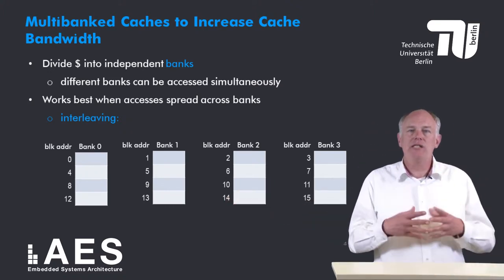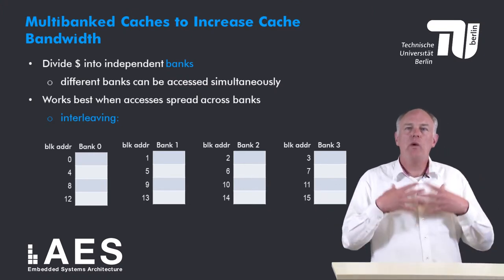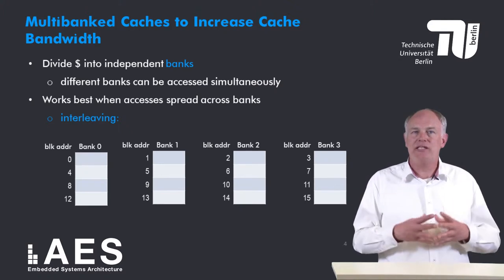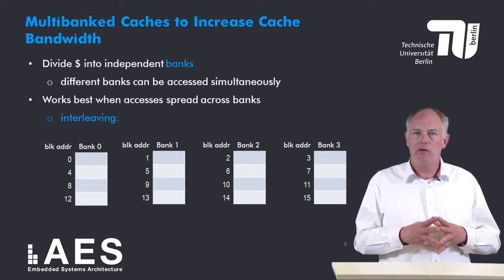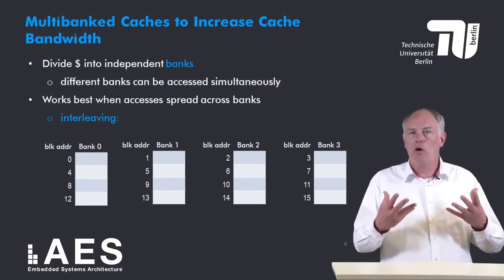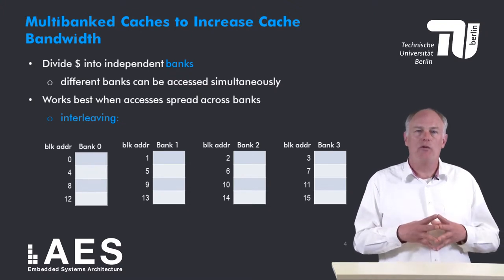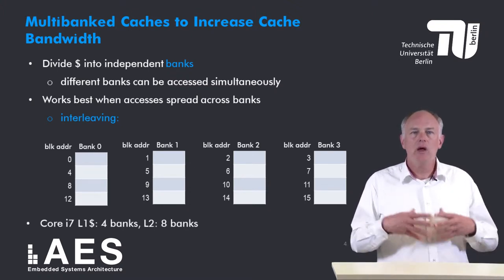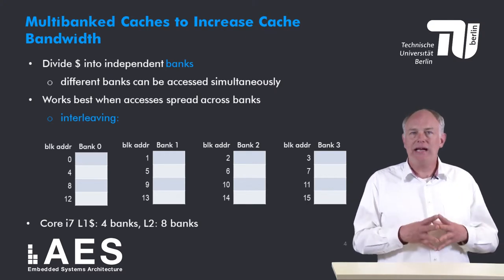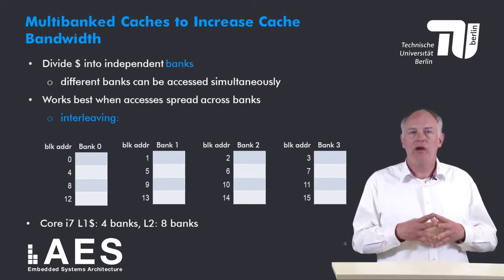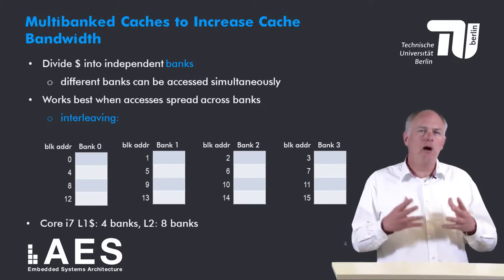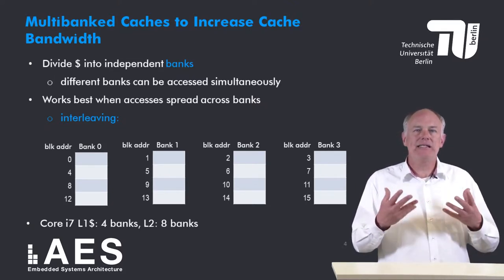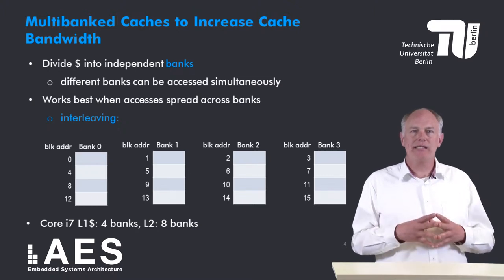As this example shows, when there are four banks, bank 0 contains all blocks whose address modulo 4 equals 0, bank 1 contains all blocks whose address modulo 4 equals 1, and so on. Multi-banked caches are quite common. For example, the level 1 cache of the Core i7 has 4 banks and its level 2 cache has 8 banks.